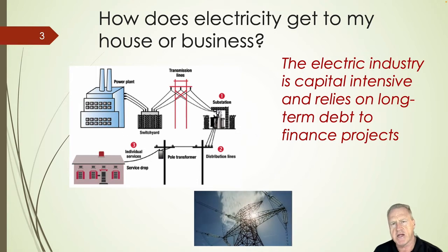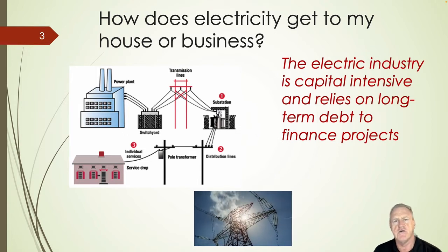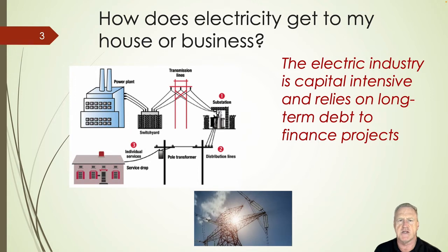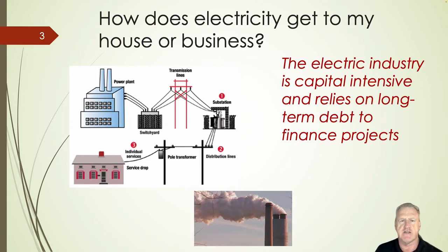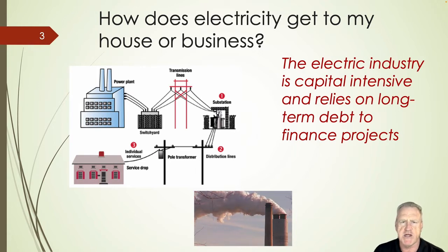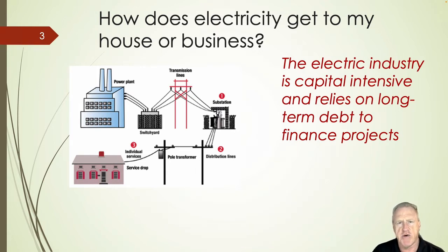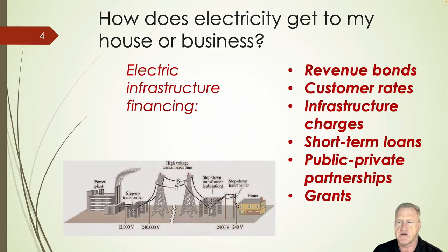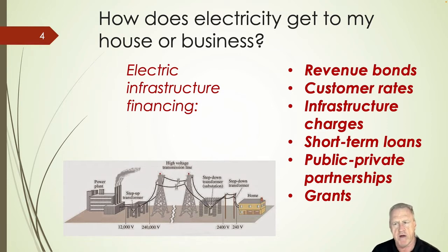The idea is to match the length of the debt to the length of the property placed into service. If we have a power plant that lasts 40 years, we try to issue 40-year bonds so that debt repayment matches the life of the asset. After 40 years you replace it with the next generation of production facilities. Matching capital intensity to rates is a big issue in the electric business.